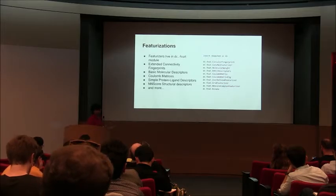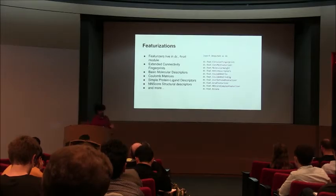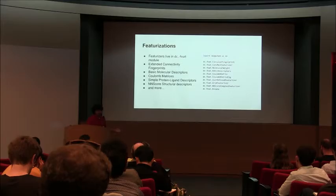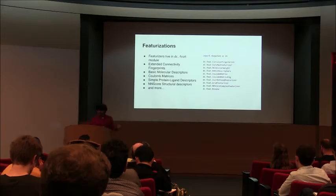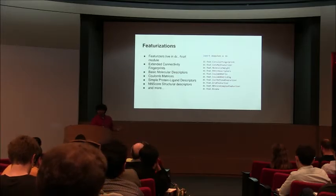We have ways of processing structural input. The grid featurizer lets you take in a protein-ligand complex and process that into a vector. By building up this high-quality library of featurizations and ways of processing chemical input, we make it easy for others to do this, since it's not easy to build these things. We built on a lot of work from the RDKit folks and others, and we've added a lot on top.